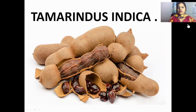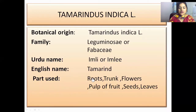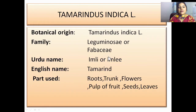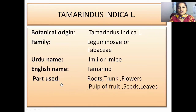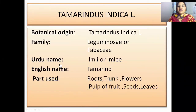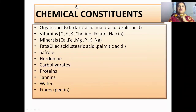Tamarindus indica is the plant. Its botanical origin is Tamarindus indica. Its family is Leguminosae or Fabaceae. Its Urdu name is Imli or Amli. Its English name is tamarind. The parts used are the roots, trunk, flowers, pulp of fruit, seed, and leaves. In Sindhi, it is called 'Getwar Money'.